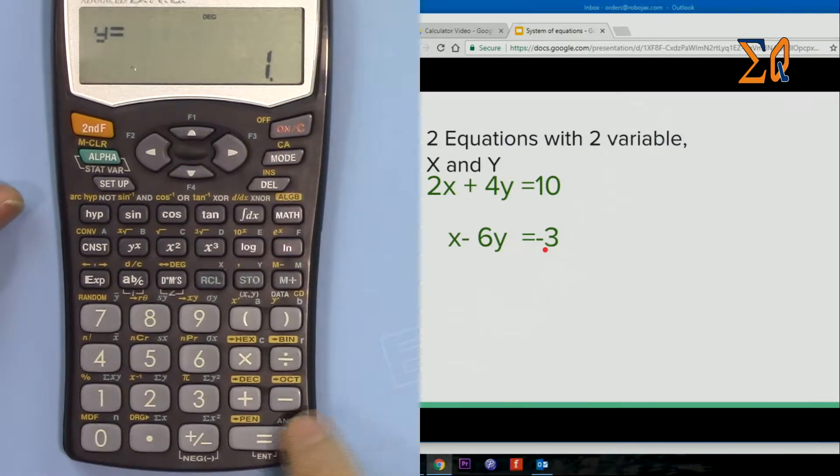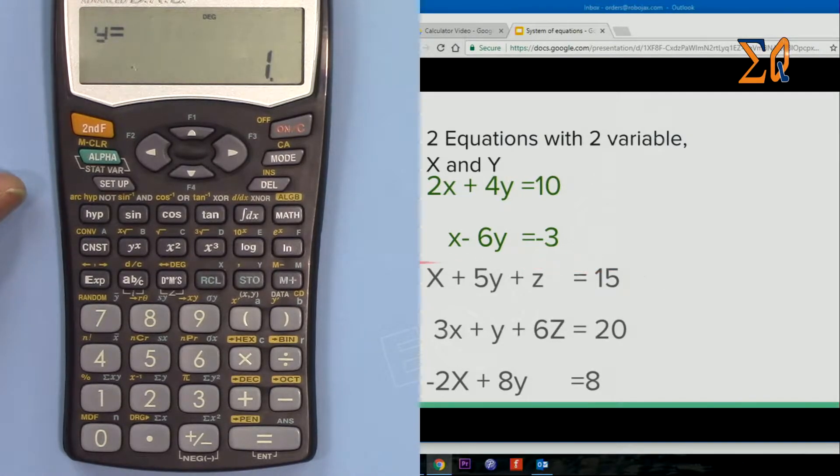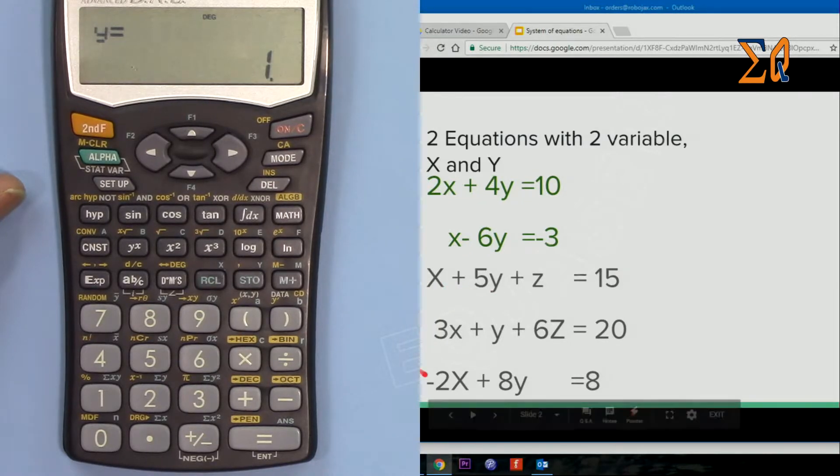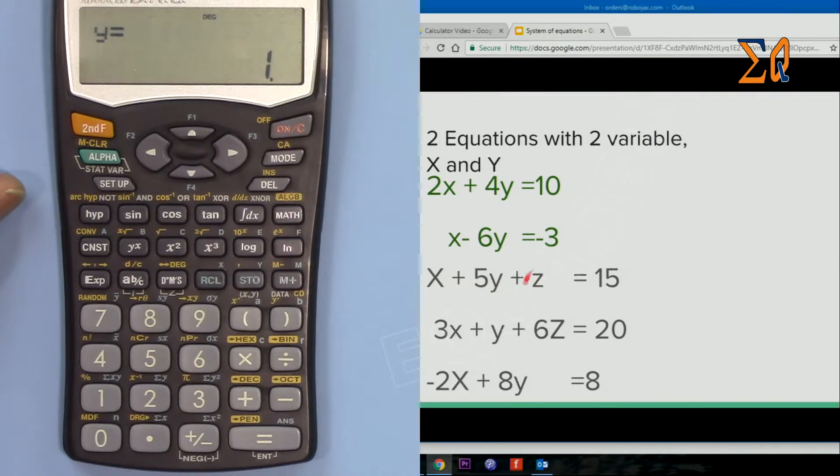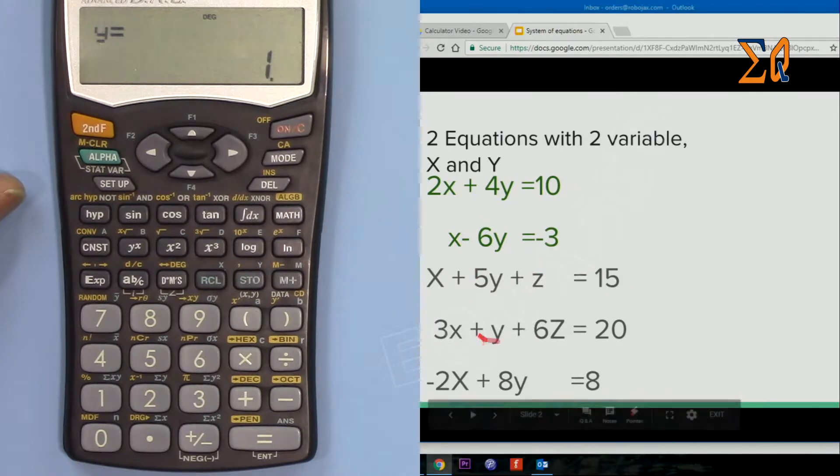So now we have system of three equations with three variables X, Y and Z. So this is equation 1, 2 and 3, and this is A1, B1, C1 and then D1, and A2, B2, C2 and so forth.